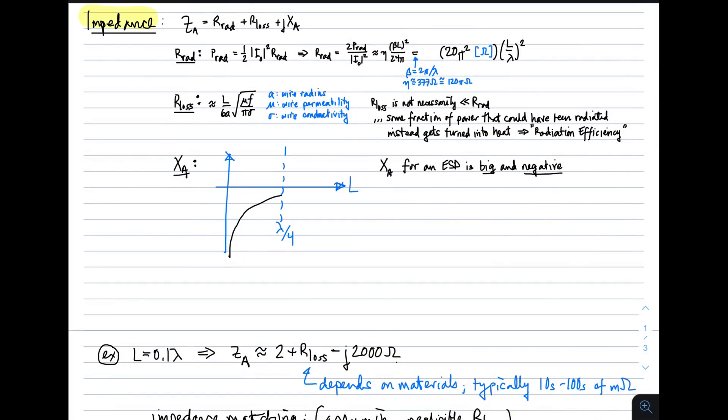Next, let's look at impedance. The impedance in general is the sum of the radiation resistance, the loss resistance, and the reactance.